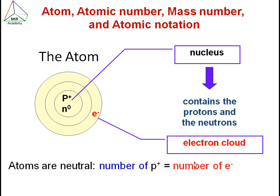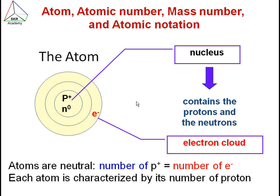But if the number of electrons changes, either lower or higher, then the atom becomes an ion. We will study about ions in a later video. In the periodic table, each atom is characterized by its own number of protons – each atom has its own characteristic number of protons.